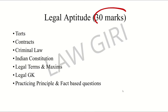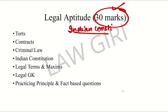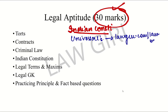Legal Aptitude is 30 marks. Step by step, try to make notes. First, cover the Indian Constitution — this is important and once done, the rest of the topics like current affairs will be easier to understand. For Indian Constitution, use Universal's book for CLAT and other law entrance exams. If you have any confusion about the book, visit lawkiri.com/law-books where I have provided links.